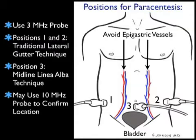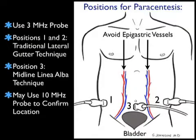We can also use the 10 MHz higher frequency probe to get a better look at the abdominal wall in relation to the bowel and ascites fluid prior to our puncture attempt. In fact, this will give us a more detailed look into the abdominal cavity to better plan our approach for the paracentesis procedure.